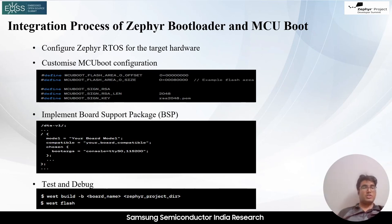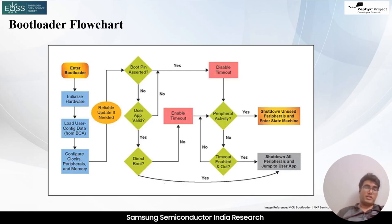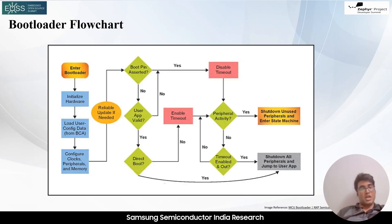You can see some code snippets in the slides showing how to proceed with the integration process. We have to develop board support packages for MCU boot as per our own configuration. In the basic bootloader flowchart, as the bootloader initiates, initialization of the device starts. It loads user configuration data from the bootloader customizable area, then configures clocks, peripherals, and memory. If any update is required, the boot pin gets asserted and the process goes to firmware update. Otherwise, it checks if the user application is valid via checksum or cryptographic verification, and then goes for direct boot or through the boot timeout.